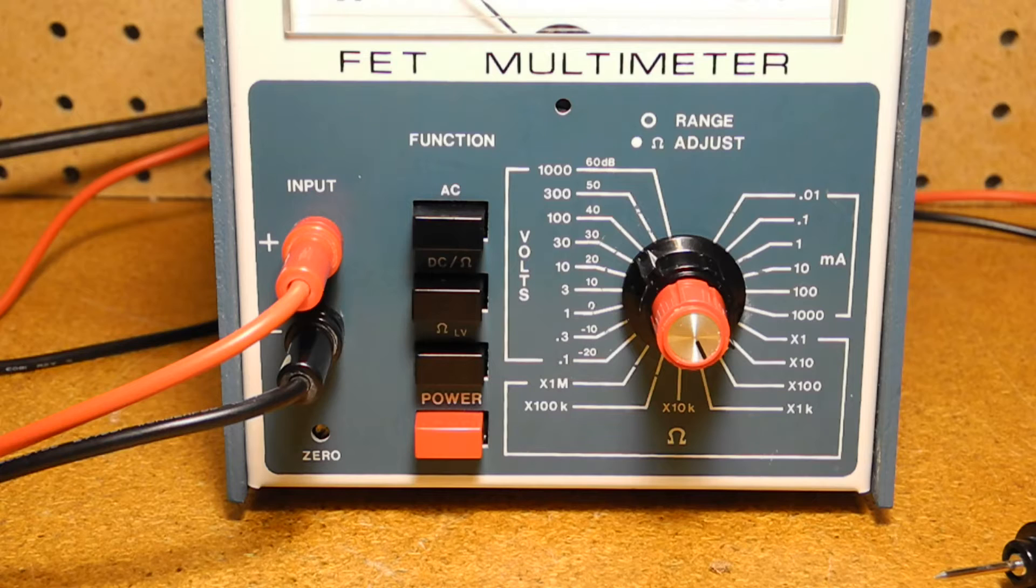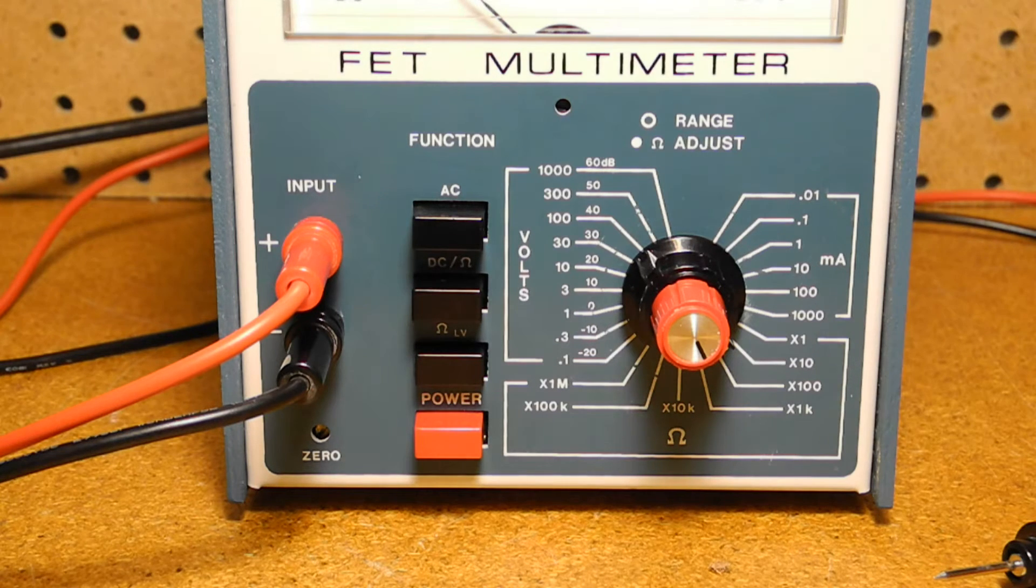DC volts can be measured on nine ranges, 0 to 0.1, 0.3, 1, 3, 10, 30, 100, 300, and 1000 volts DC full-scale. Input resistance is 10 megaohms and is spec'd at plus or minus 2% accuracy.